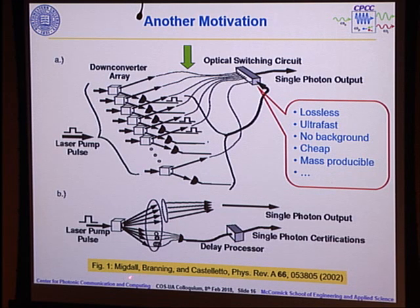Another motivation that has been in the field was this high rate source that was based on essentially parallelized system. This is multiplexed in space, attributed to Alan Migdal, where he thought about pumping many arrays of these spontaneous parametric down-converters. You will detect one of those, and then depending on which of these detector fires, you need some kind of a switch yard to route that photon through to a single bus. The requirements that you want to have on these kind of switches are very stringent. You want lossless, ultra-fast, no background, cheap, mass-producible, and so on and so forth.